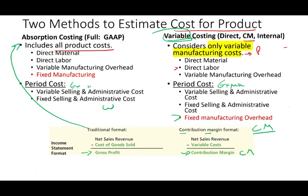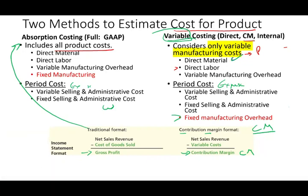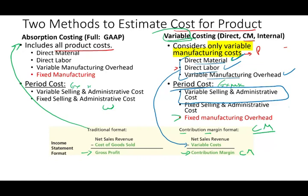When we say variable cost under the contribution margin format, we mean direct material, direct labor, variable overhead, and variable selling and administrative — all variable costs. The product cost includes only material, labor, and manufacturing overhead, but all of them are variable costs that contribute to contribution margin.